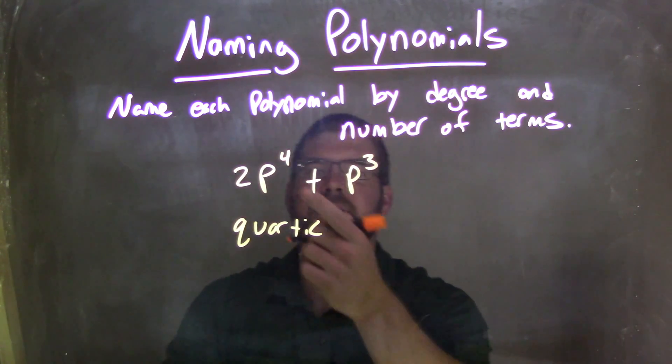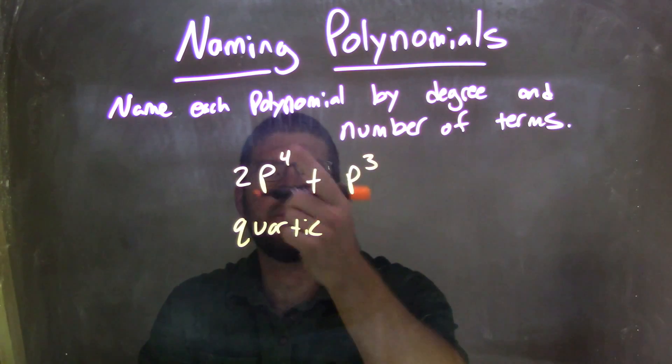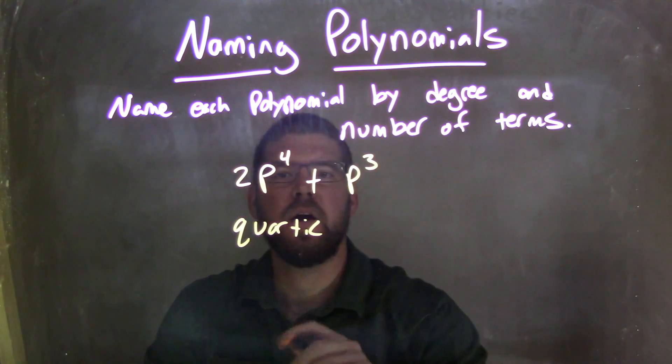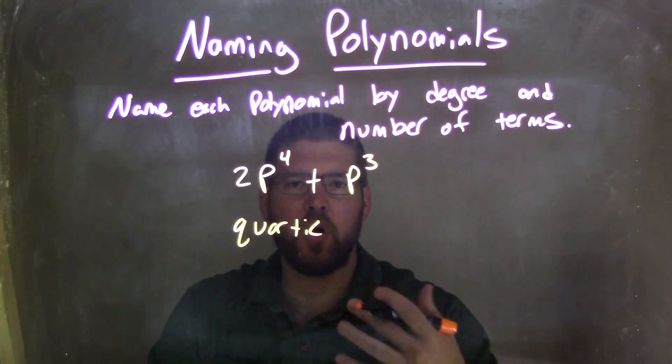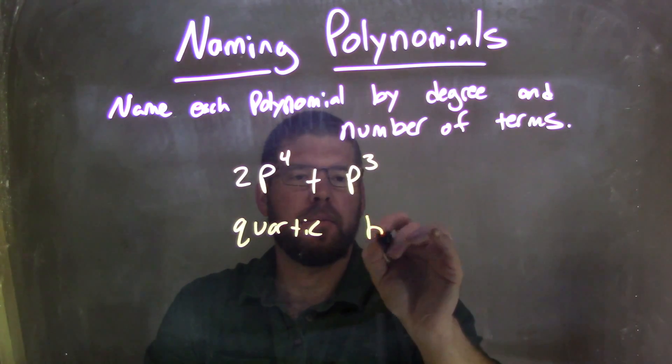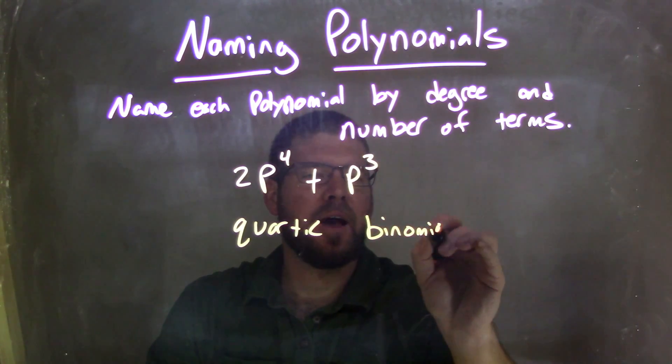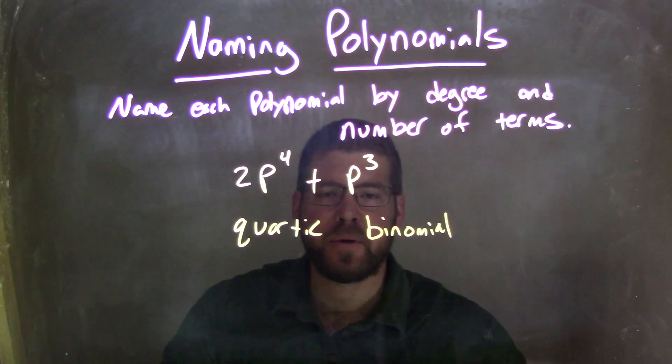Now, how many parts are there separated by the plus sign? We have one part here and another part here. So there's two parts, meaning binomial. So we have a quartic binomial.